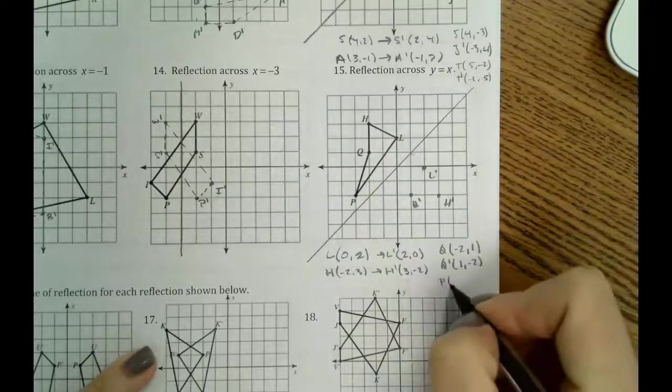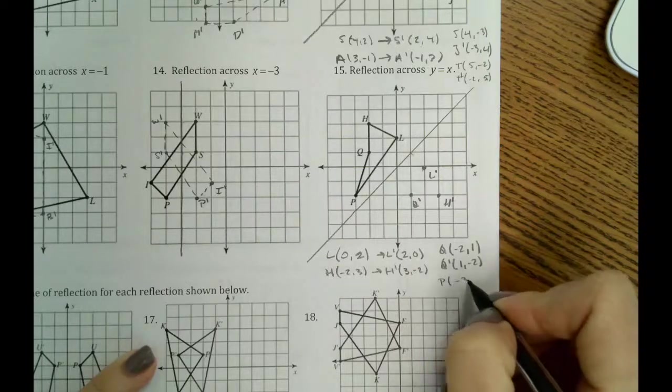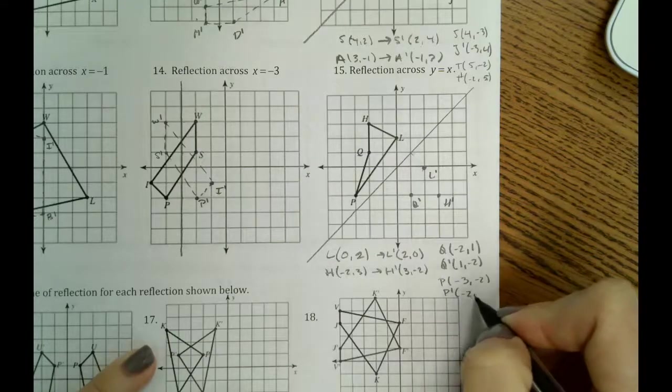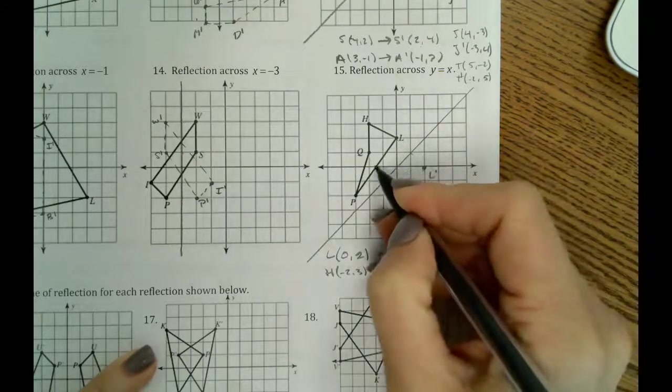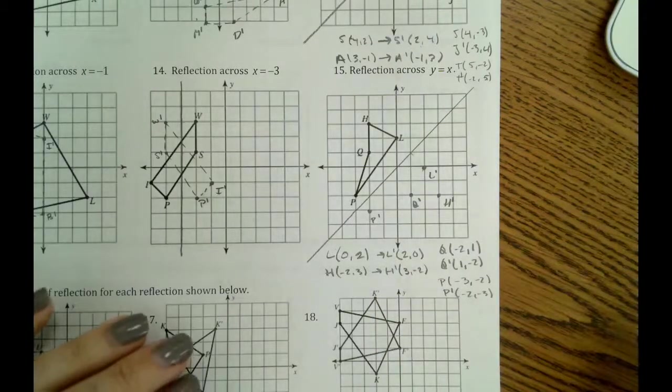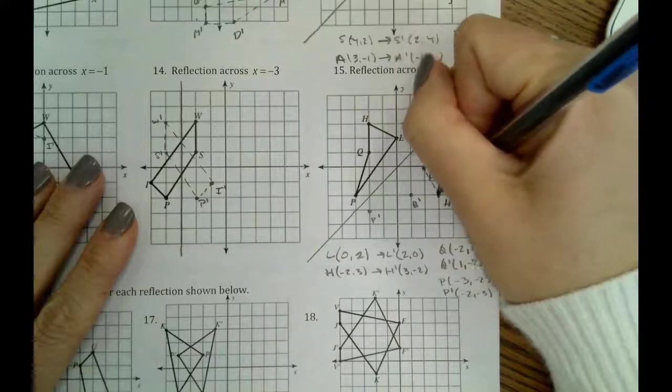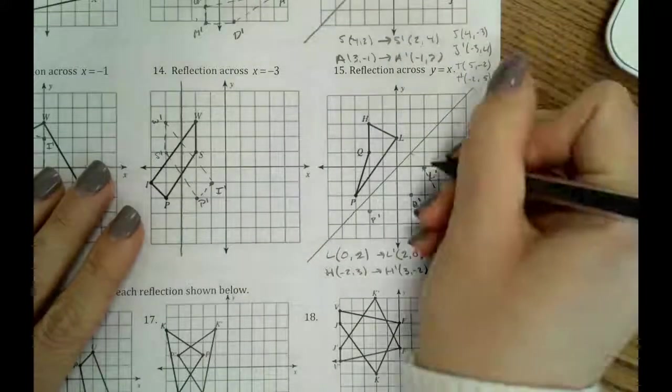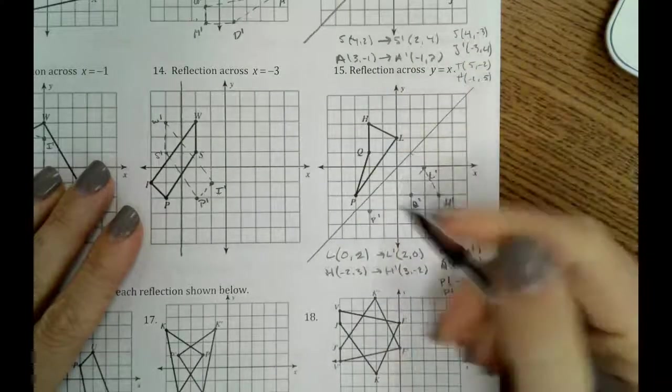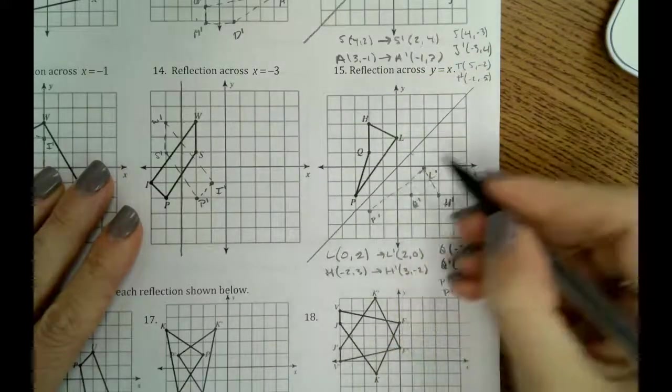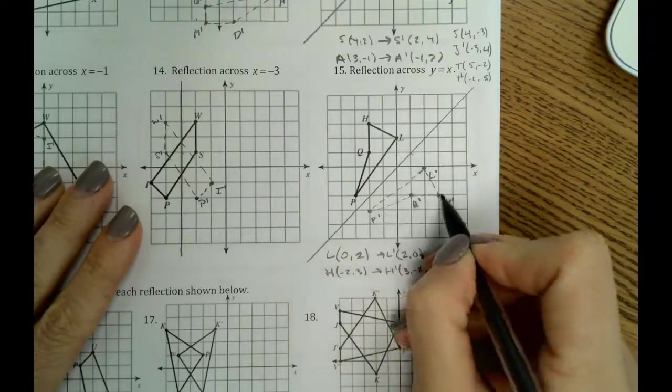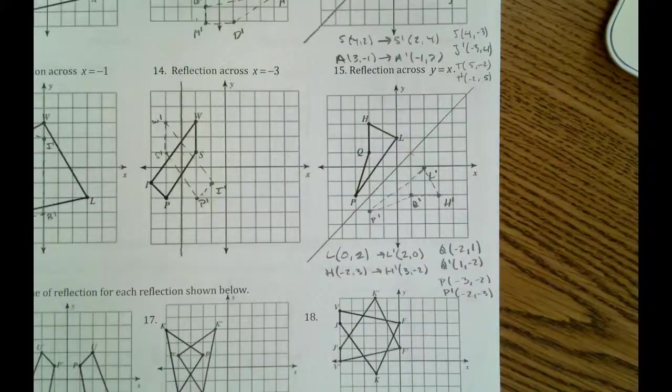And then lastly is p, which is at negative 3, negative 2. So our new p will be at negative 2, negative 3. So we reflected it over our y equals x line.